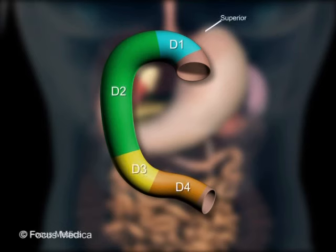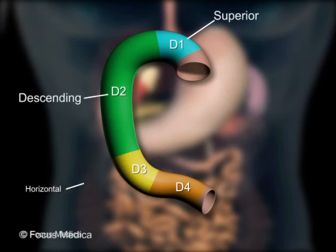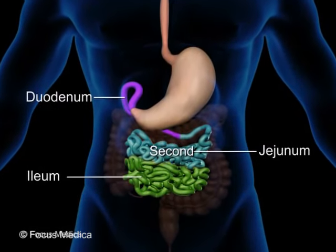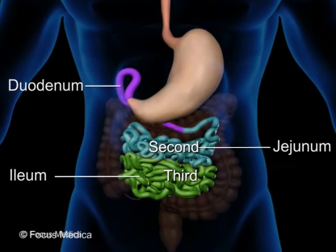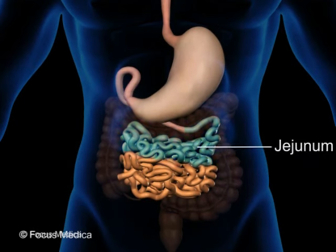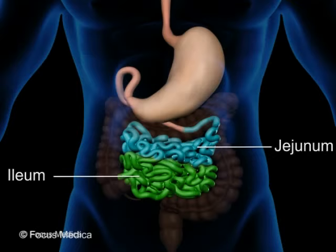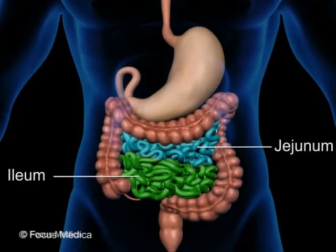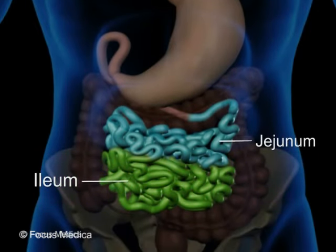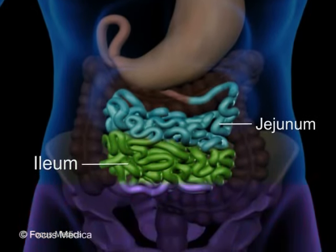The four parts of the duodenum are also named the superior, descending, horizontal, and ascending. The jejunum and ileum form the second and third parts of the small intestine respectively. Together they form the principal segments for digestion and absorption in the gastrointestinal tract. The coils of jejunum and ileum lie within the frame formed by the large intestine, seen in the central and lower parts of the abdomen, with a few coils extending into the pelvis.